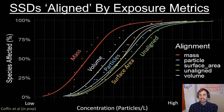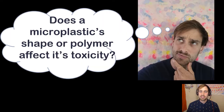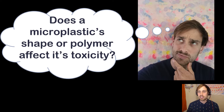Here's an example of aligned species sensitivity distributions of microplastics based on different exposure metrics. This alignment framework is agnostic to categorical differences in a particle's shape and composition in influencing toxicity, which led me to question if a microplastic's shape or polymer can affect its toxicity.